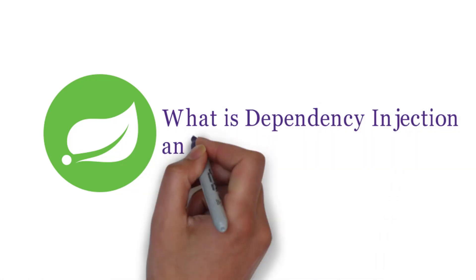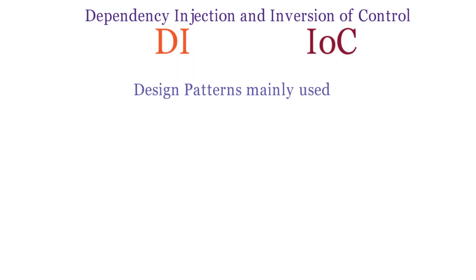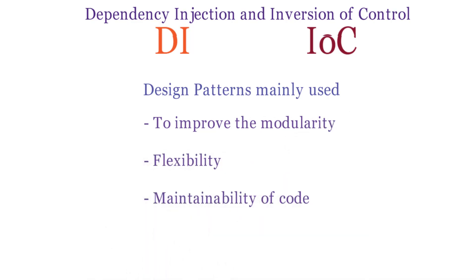What is dependency injection and inversion of control? Dependency injection and inversion of control are also called DI and IOC. These are design patterns mainly used to improve the modularity, flexibility and maintainability of code.